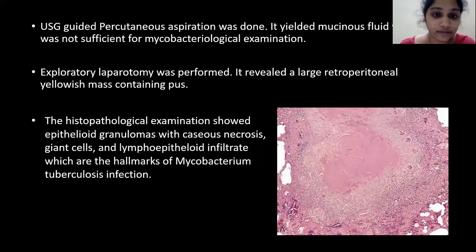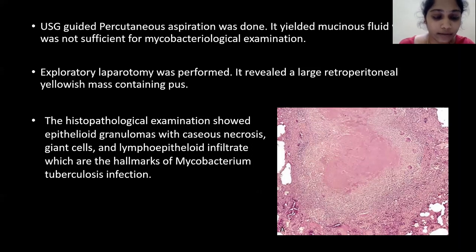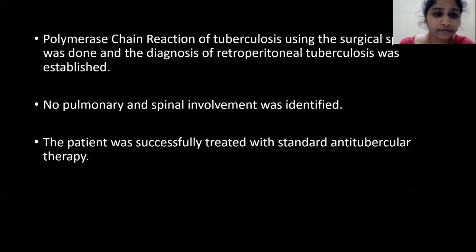Ultrasound-guided percutaneous aspiration was done. It yielded a mucinous fluid which was not sufficient for mycobacteriological examination. Exploratory laparotomy was then performed, which revealed a large retroperitoneal yellowish mass containing pus. Histopathological examination of the surgical specimen showed epithelioid granulomas with caseous necrosis, giant cells, and lymphoepitheloid infiltrates, which are the hallmarks of Mycobacterium tuberculosis infection. Polymerase chain reaction for tuberculosis using the surgical specimen was done, and the diagnosis of retroperitoneal tuberculosis was established.